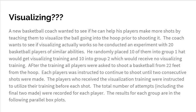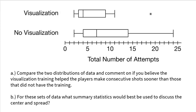The top box plot is for the visualization group and the bottom is for the no-visualization group, with the scale showing total number of attempts. The first question asks us to compare the two distributions and comment on whether visualization training helped players make consecutive shots sooner. Keep in mind that these are how many attempts it took until they made their two shots, so lower would be better. If it only took three shots, that means you missed the first and made the next two in a row.